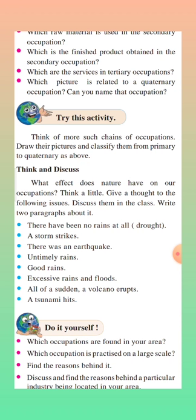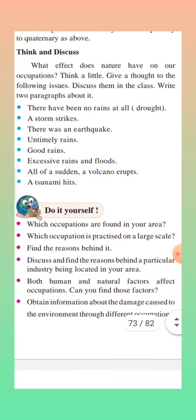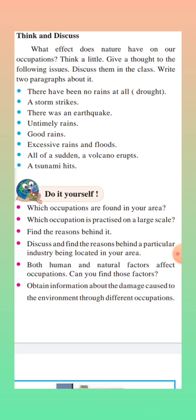Mining can be affected due to floods, rains, and earthquakes. Fishing occupation can face problems due to storm strikes. Mining and fishing occupations will face problems due to all these natural events. Also find out which occupations are practiced in your area on a large scale and find the reason behind it. In our area, sugar factories are there, so tertiary occupations are more common. Both human and natural factors affect occupations — nowadays, due to lockdown, we can see how occupations are being affected.